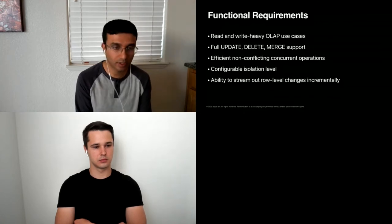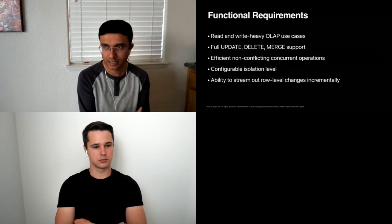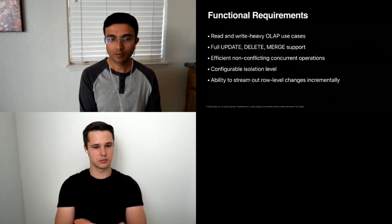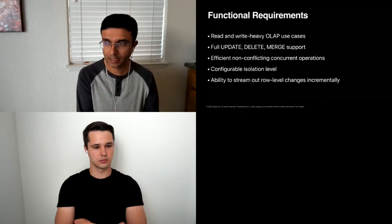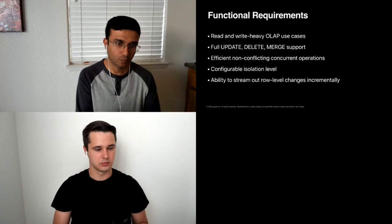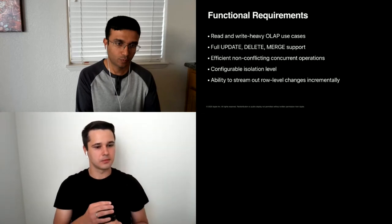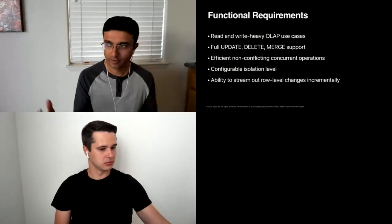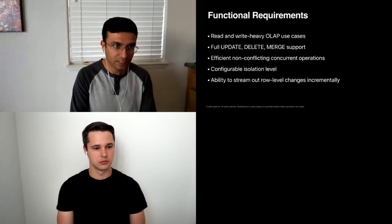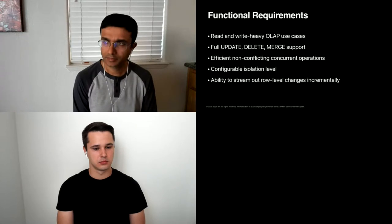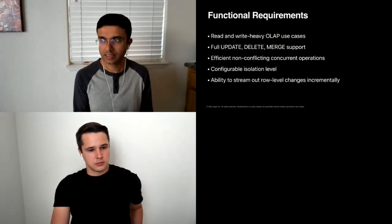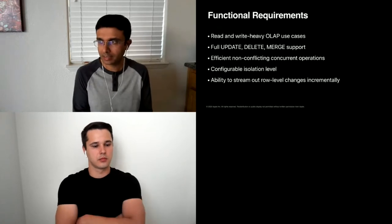Configurable isolation levels are important. Iceberg already provides serializable isolation — the strongest form any database can provide. However, when large volumes of writes and reads are happening simultaneously, you can also switch to snapshot isolation, which provides better write performance. We also need the ability to stream out row-level changes incrementally, so you can replay events from one Iceberg table onto another.